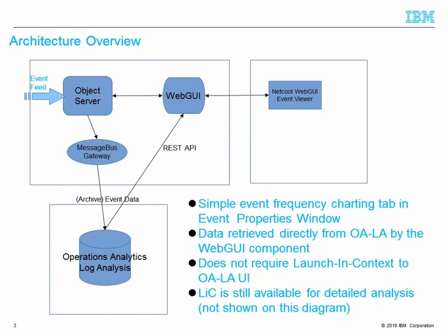So, architecture overview. In this architecture, in the box in the top left-hand side, we can see the Omnibus object server and web GUI. We can see a message bus gateway which sends archive event data to the LA server. And in the top right we can see the web GUI event viewer running in a browser.